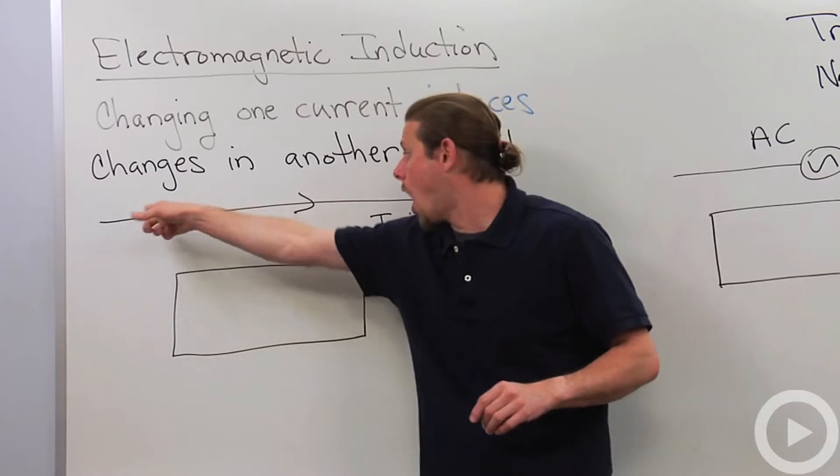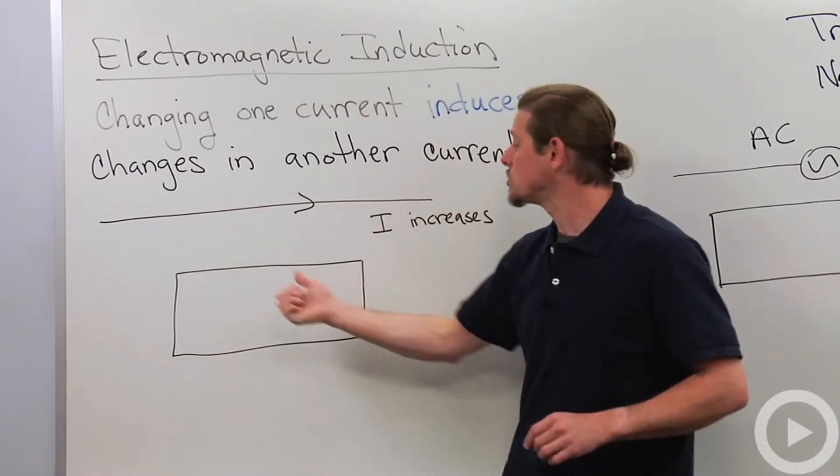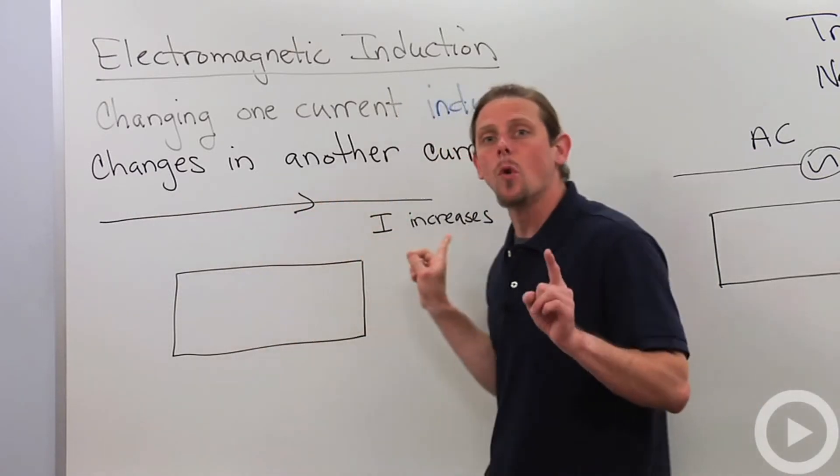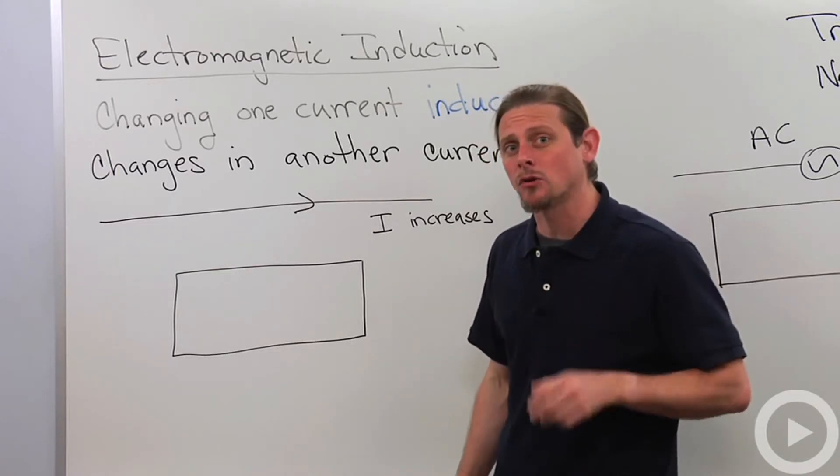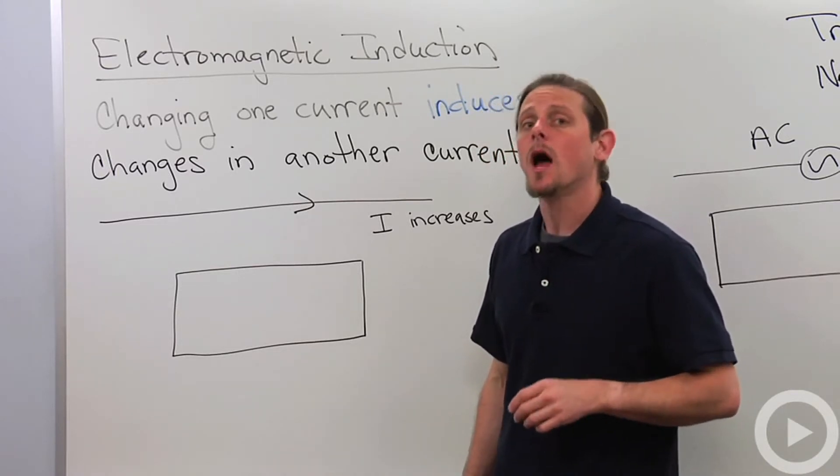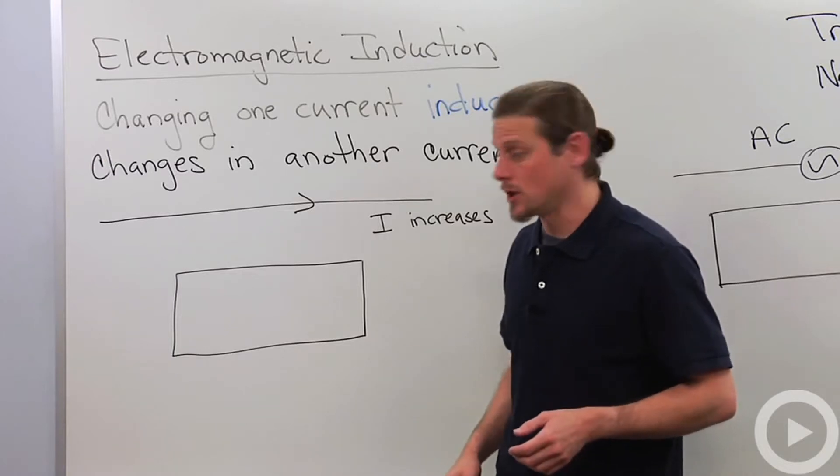We've got a current in a long wire that's going to the right and it's going to increase. Let's see what that increase in current means as far as the Faraday-Lenz law is concerned.